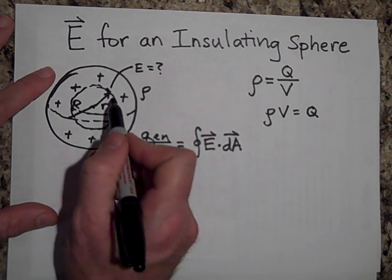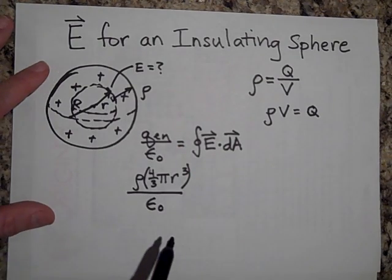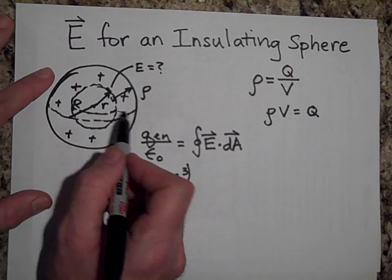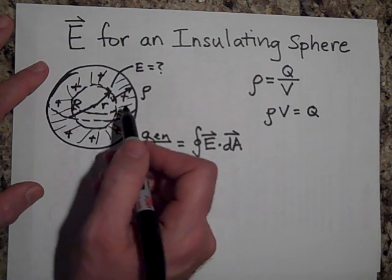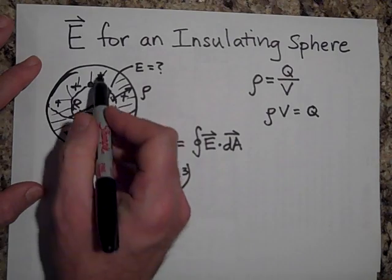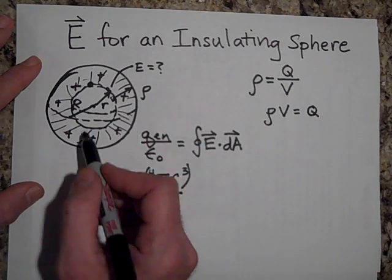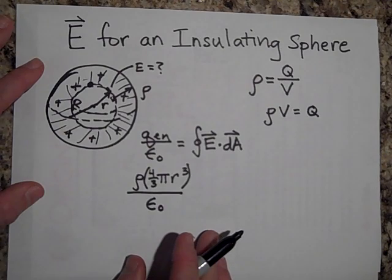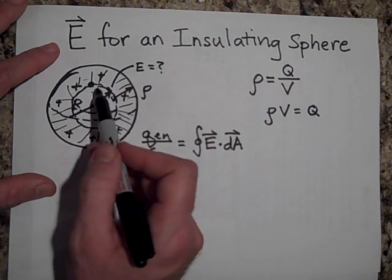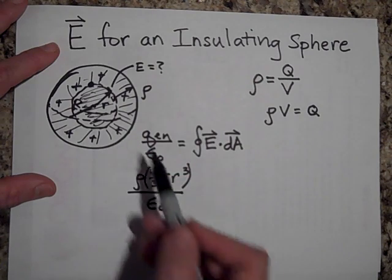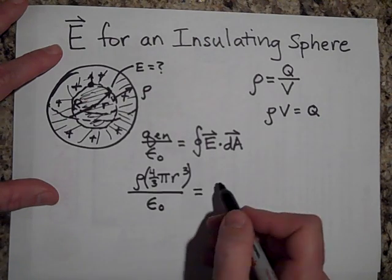At the Gaussian surface, dA points outward and so does the electric field — the field points straight out. By symmetry, all the charge outside the Gaussian surface cancels: if you place a positive charge inside, the charge above pushes it down and the charge on the outside pushes it up, and they negate one another. So the only electric field comes from the charge enclosed within the Gaussian sphere.